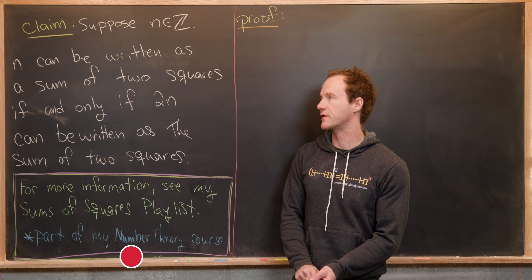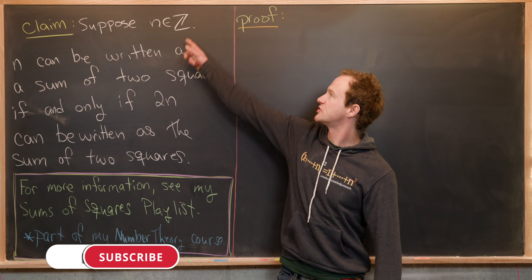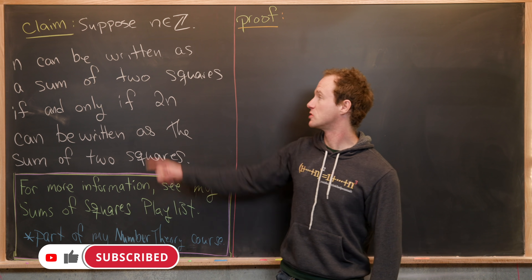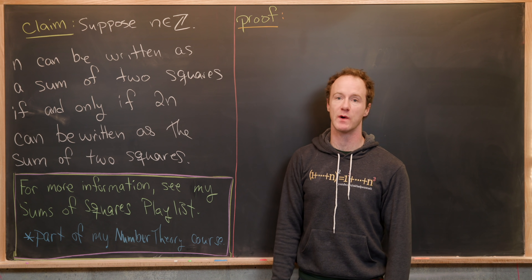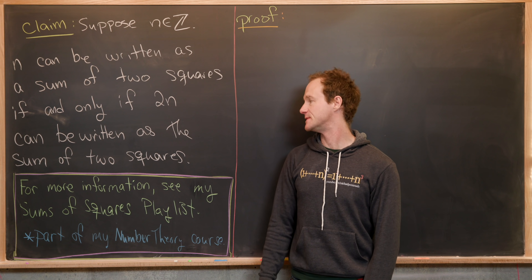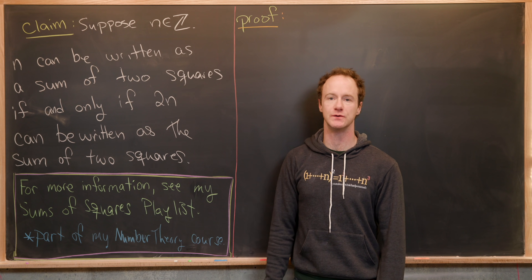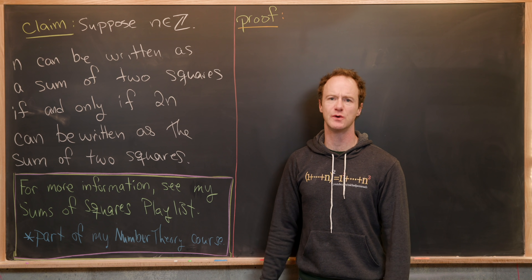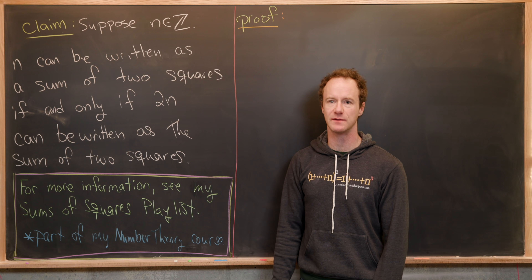Here we're going to look at a nice and quick number theory result. We're going to start with an integer n and show that n can be written as a sum of two squares if and only if two times n can also be written as a sum of two squares. This is actually a hint to a much more general result about sums of squares.